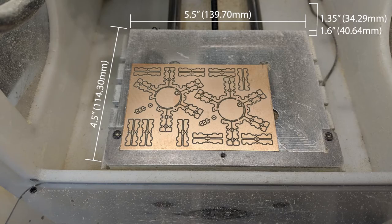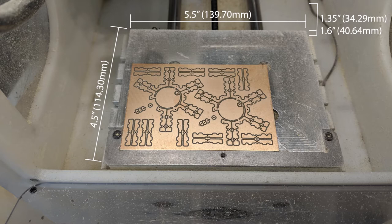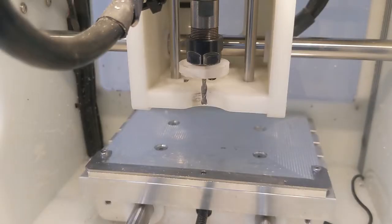Some quick facts about the mill. It's build envelope is five and a half inches wide by four and a half inches deep and supports material up to 1.35 inches thick or 1.6 inches thick depending on whether or not you have a spoil board installed. The spindle's max speed is 16,400 RPM and all of the bits we use have a one-eighth of an inch chuck.